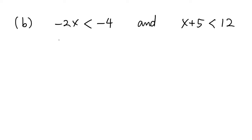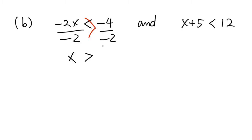Let's solve the first inequality and figure out which numbers satisfy it. We are going to divide both sides by negative 2. Because we are dividing by a negative number, we have to change the direction of the inequality, and we get x greater than 2. For the second inequality, we subtract 5, and we get x less than 7.